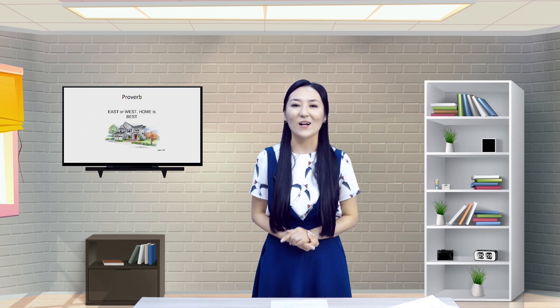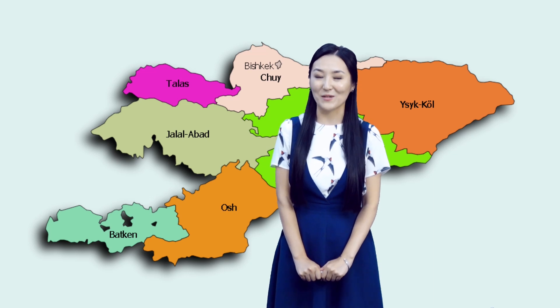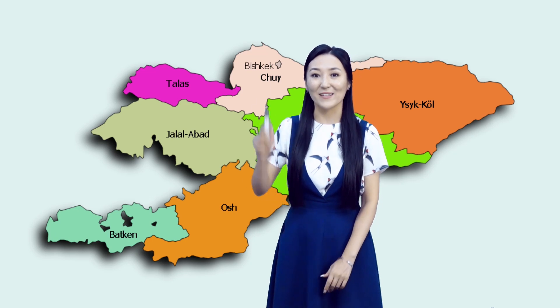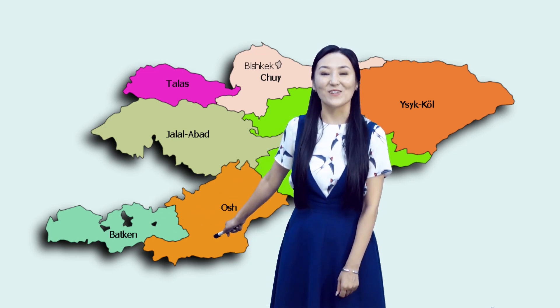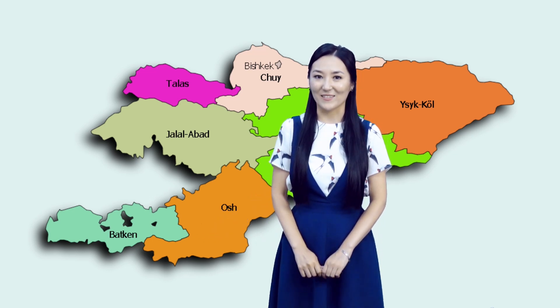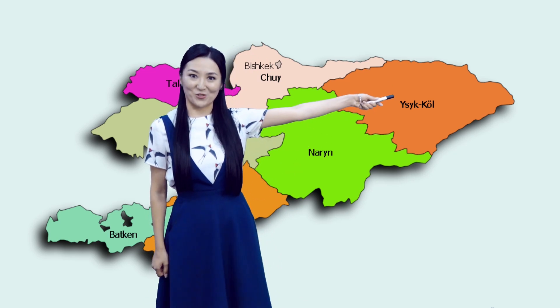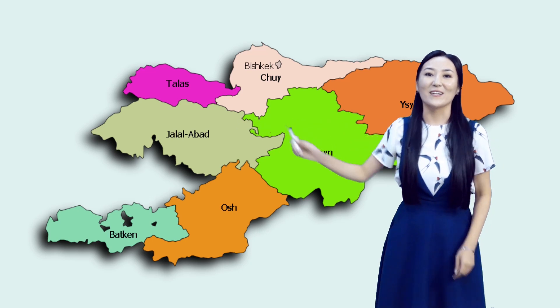I'm sure you can show and tell where your home is and how much you love it. But I wonder if you can show where the East and where the West is. Let's look at our country's map and figure out the directions. Where on the map can you see Bishkek? Where is Chuy region located? Right, it's in the north. What about Osh region? Right, it's in the south. And Issyk-Kul Lake beautifully lies in the east of our country. What about Jalal-Abad region? Right, it's in the west.